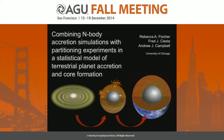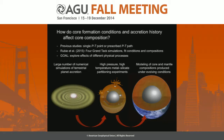I'll be talking today about a combination of n-body simulations with high-pressure partitioning experiments and how we can use this to learn about the chemical evolution of terrestrial planetary cores. I'd like to start by thanking my collaborators on this project, Andy Campbell and Fred Chesla. The main question we're trying to answer is how do core formation conditions and the accretion history of a terrestrial planet affect its core composition?